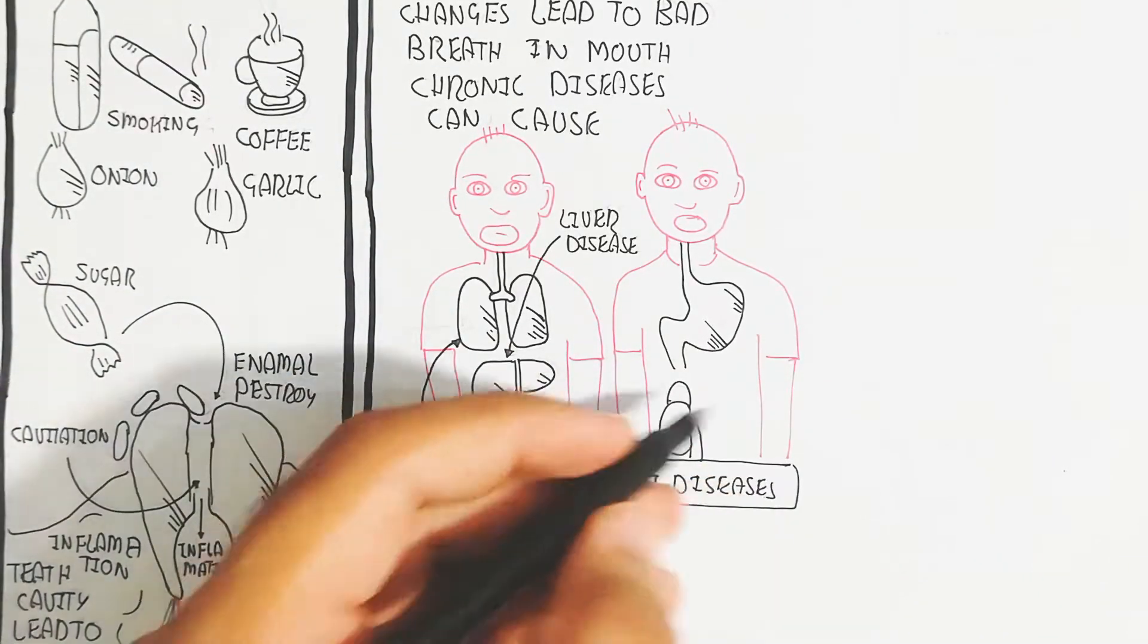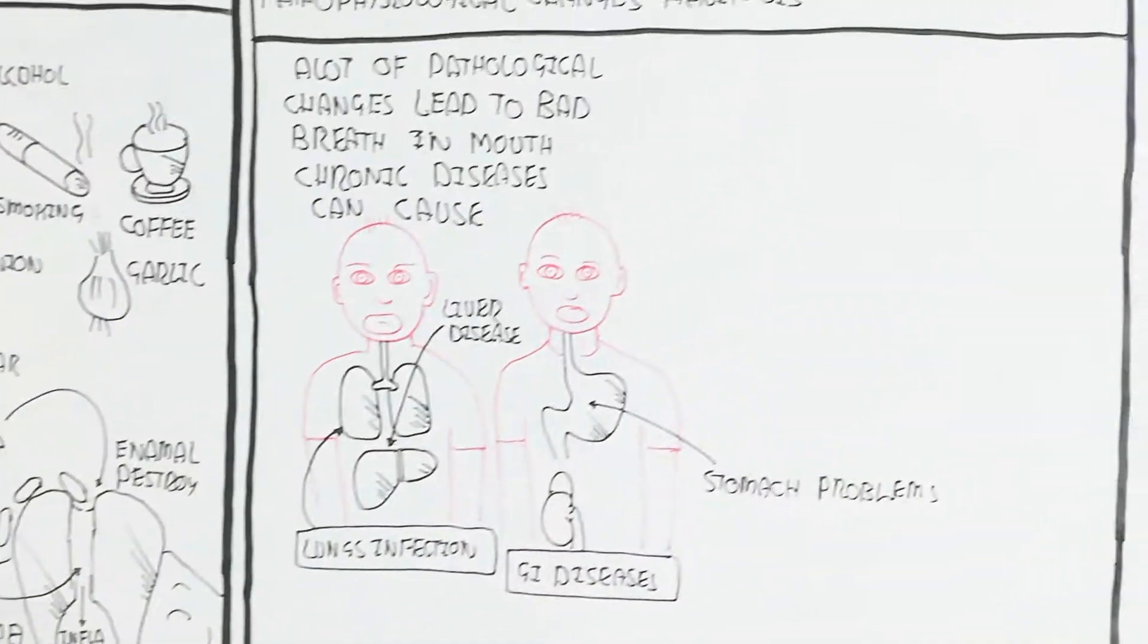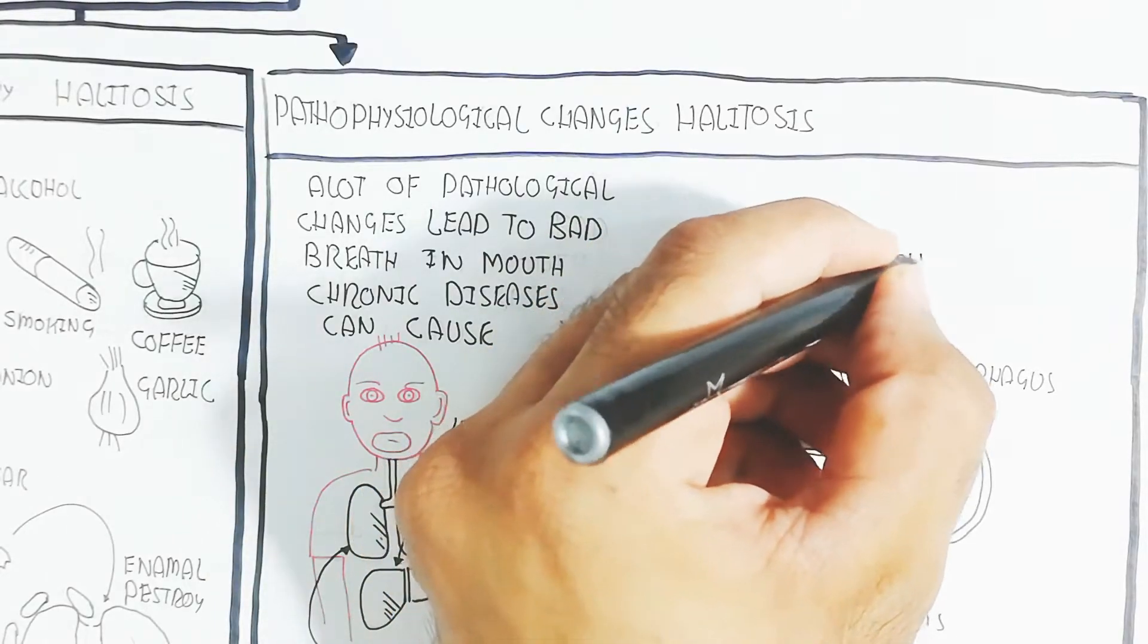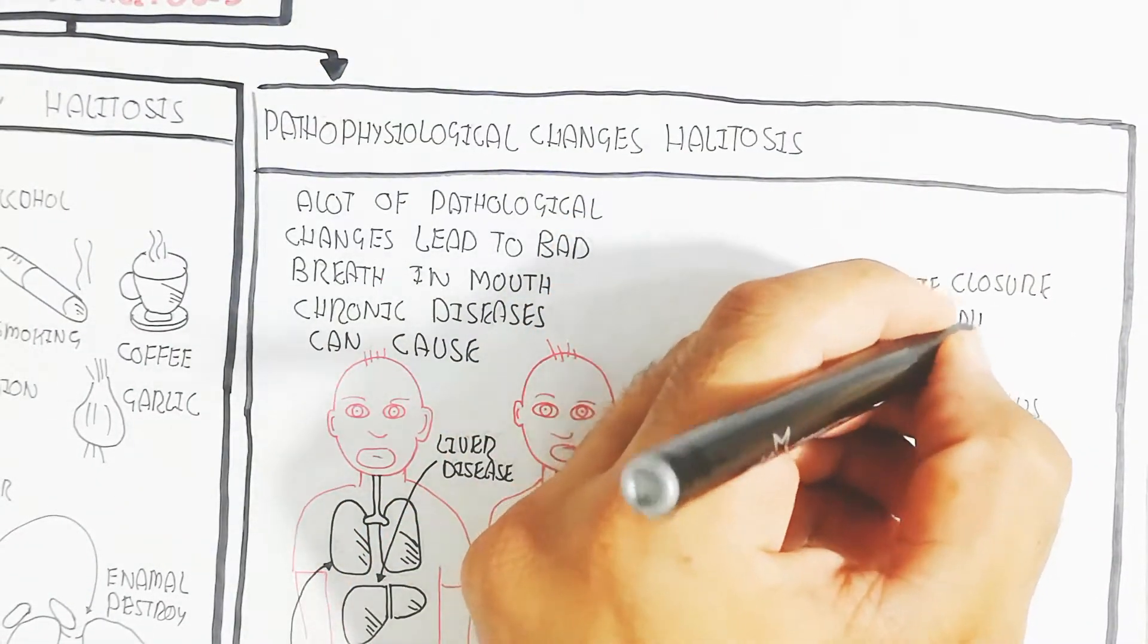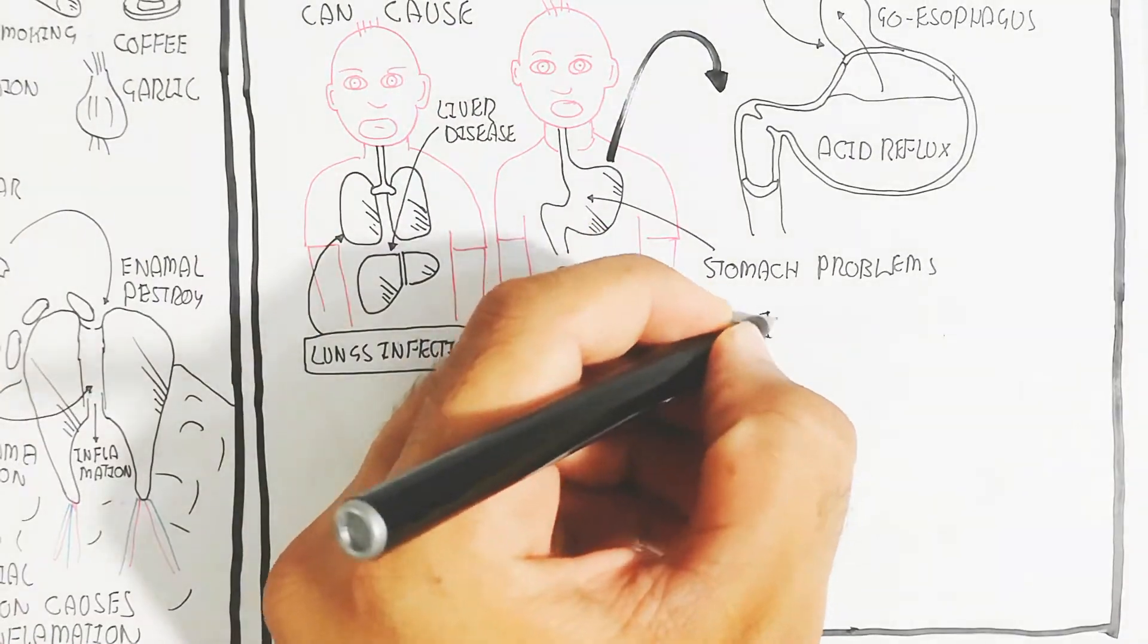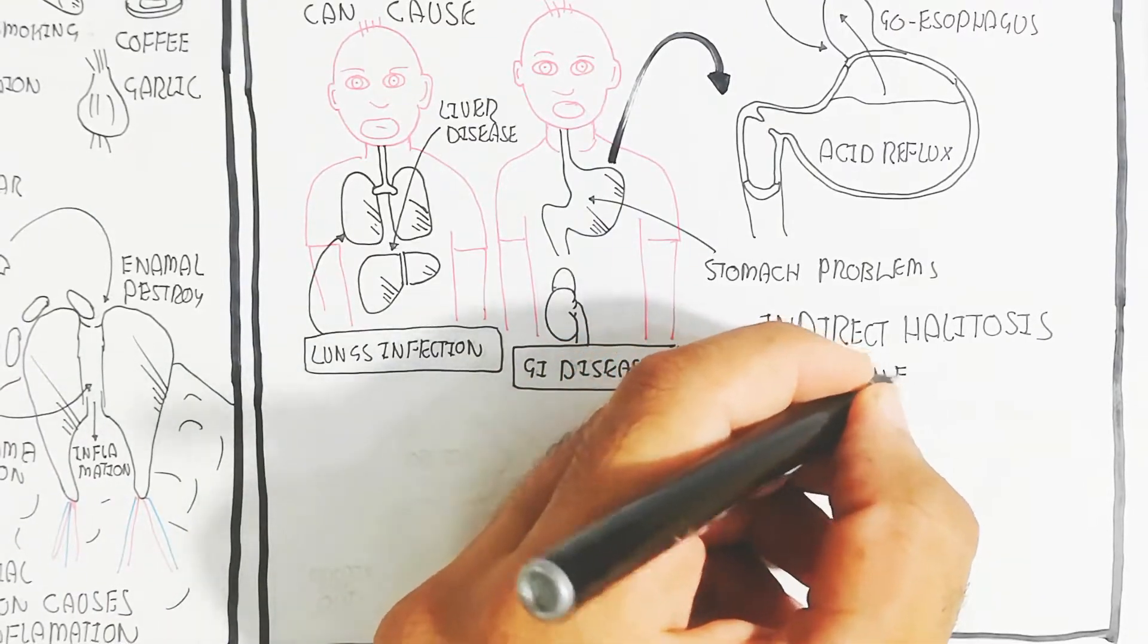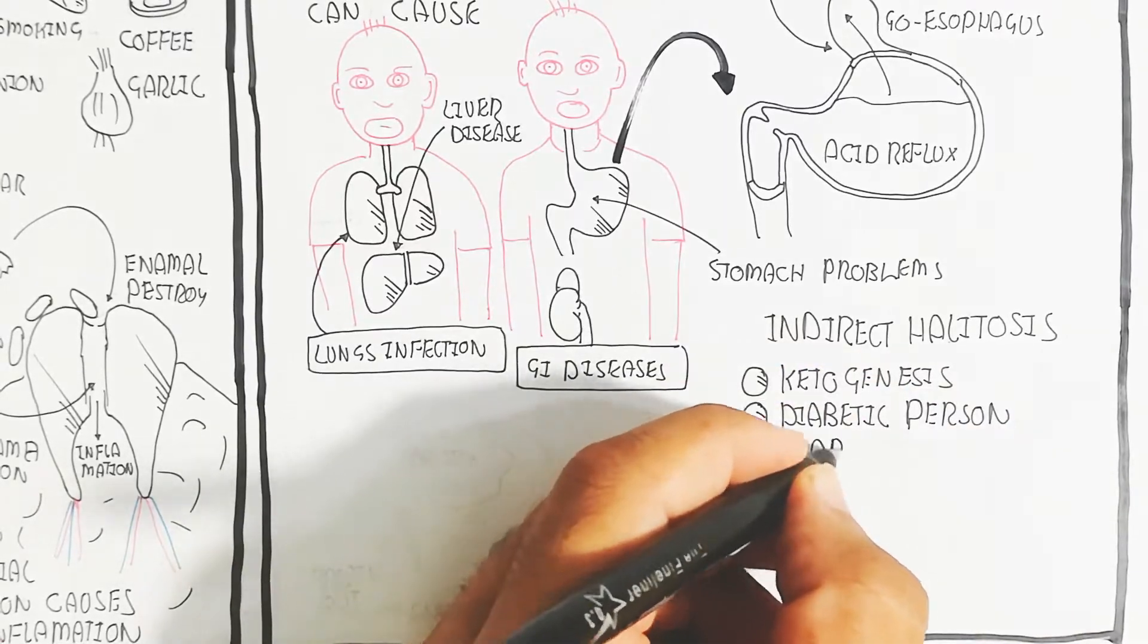Gastrointestinal tract disease, for example different types of disease in the stomach like ulceration or other problems. Incomplete closure of cardiac sphincter will lead to acid reflux going into the esophagus, which causes breath smell. Bad breath will occur due to incomplete closing.